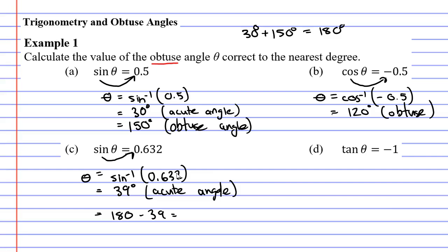What this does is it finds you the angle that is supplementary to 39. This will give us the angle of 141 degrees and 141 degrees is the obtuse angle that we are looking for.